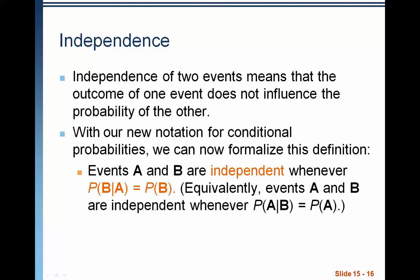So events A and B are independent whenever P of B given A equals P of B. So what this says is that the probability of B, given that A has happened, is the same as the probability of B. Meaning, knowledge of A is not changing the probability of B. And of course, this works the opposite when it's A given B equals probability of A. So all this definition means is that the probability of B doesn't change when we have information about A.